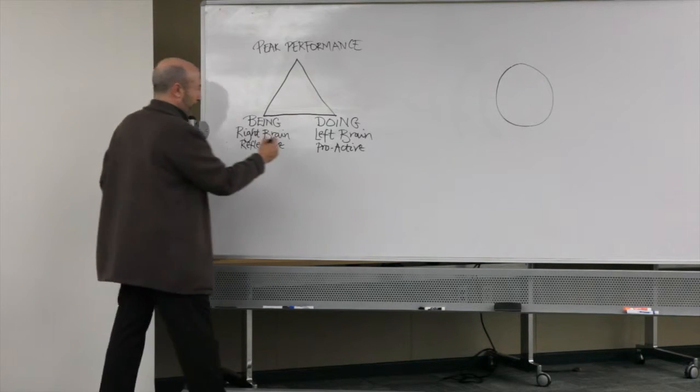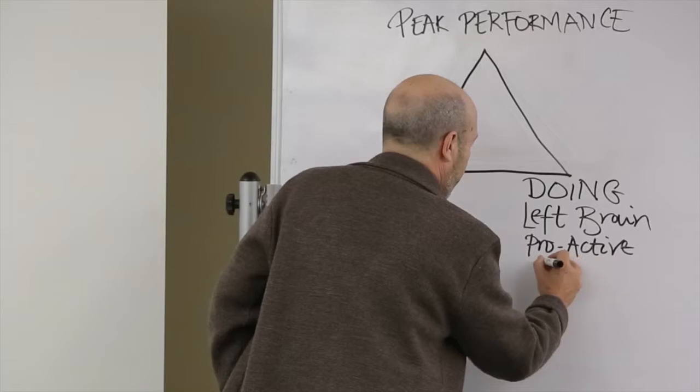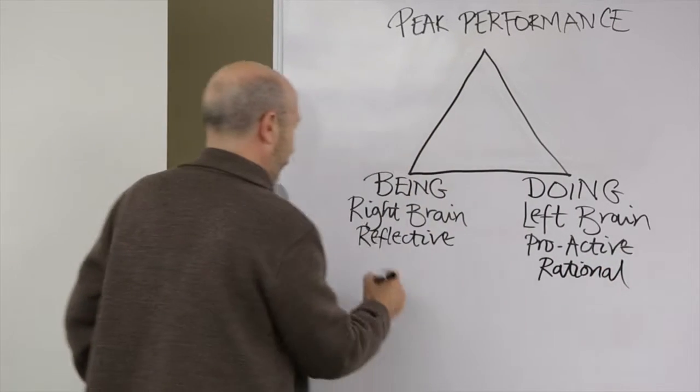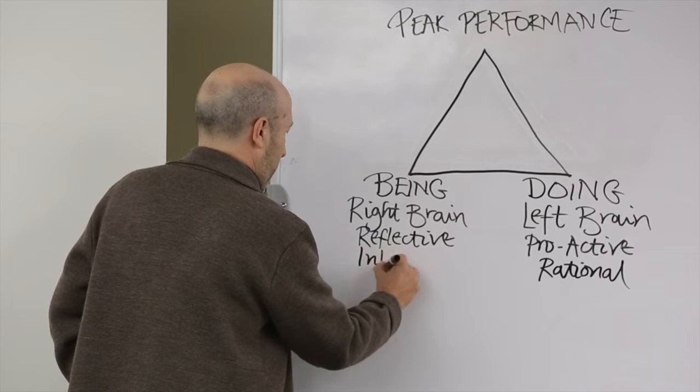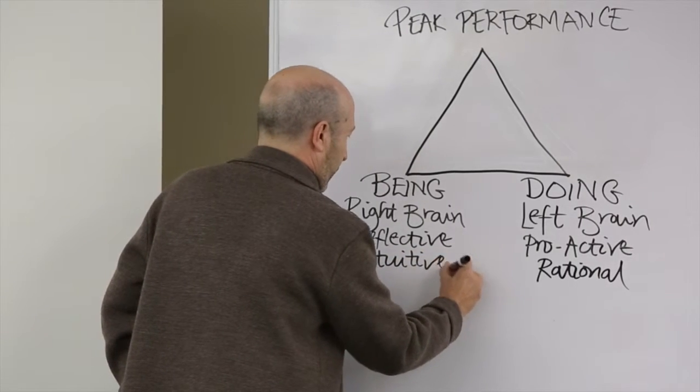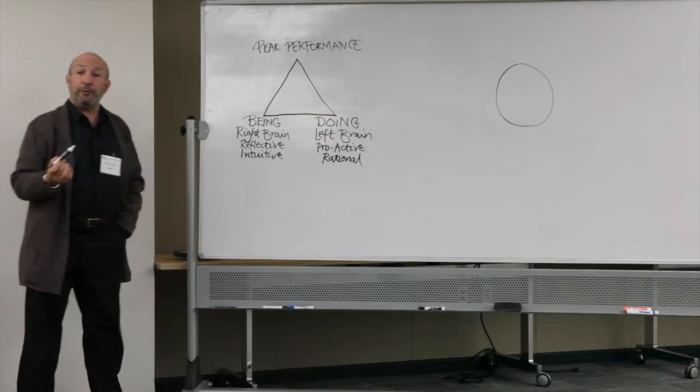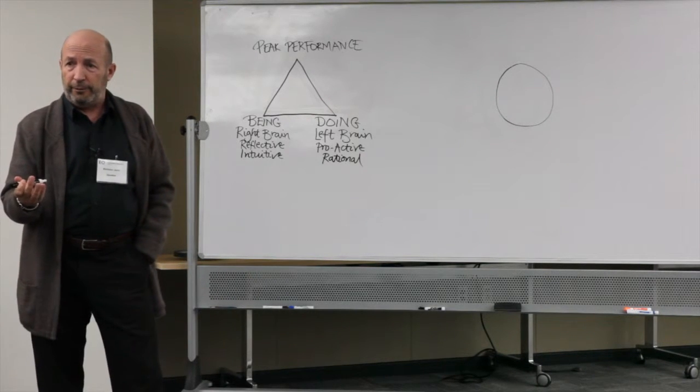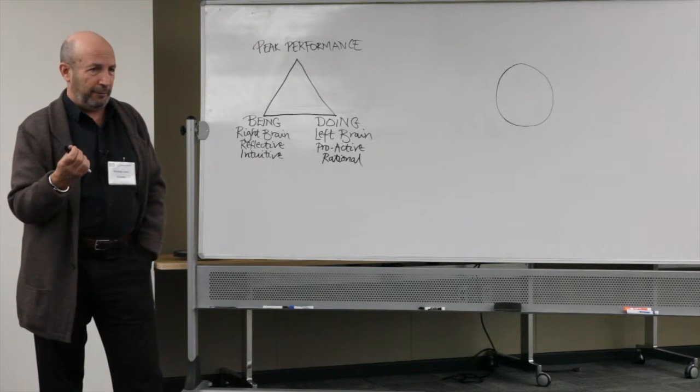So this side of us gets information in a primarily rational way. This side of us gets information in a primarily intuitive way. These are two very different, equally important faculties.